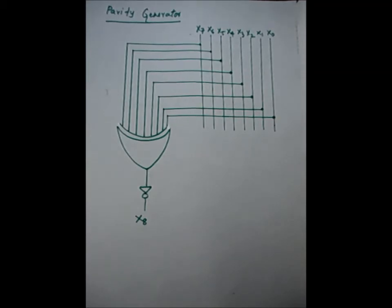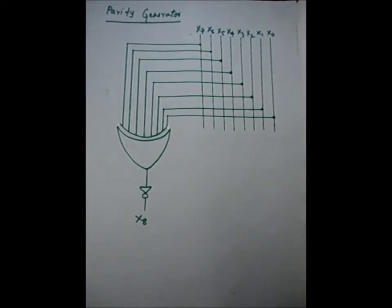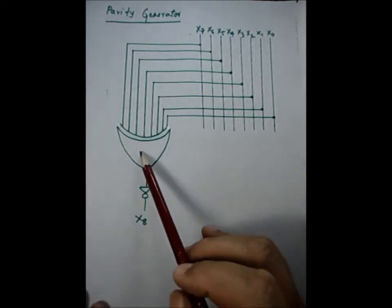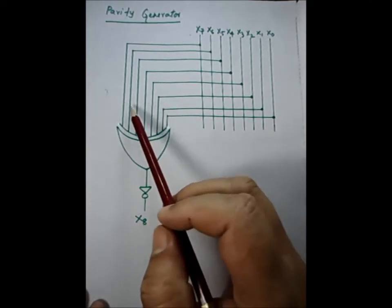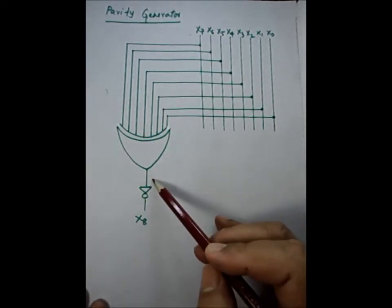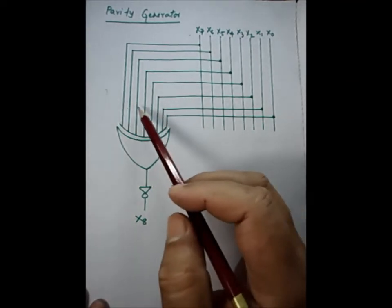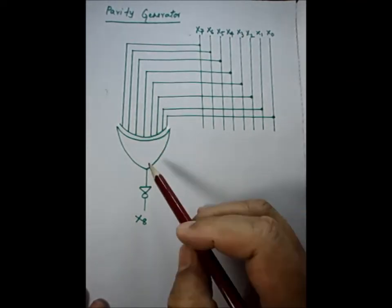We will discuss a parity generator. First, even parity means there are an even number of ones in a stream of bits, and odd parity means there are an odd number of ones in the stream of bits. An important property of the XOR gate is that if the inputs have an even number of ones, then the output will be zero, and if there are an odd number of ones in the input, then the output is one.